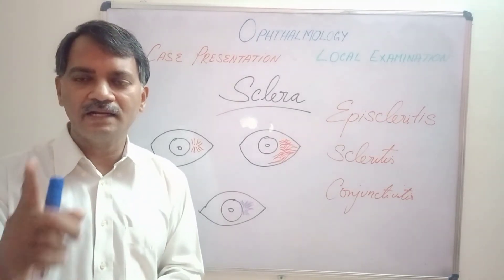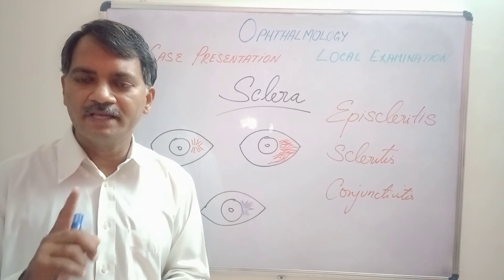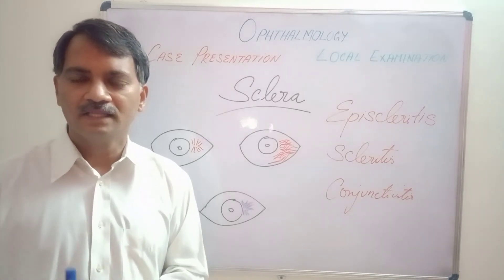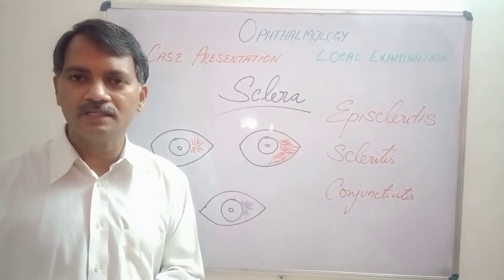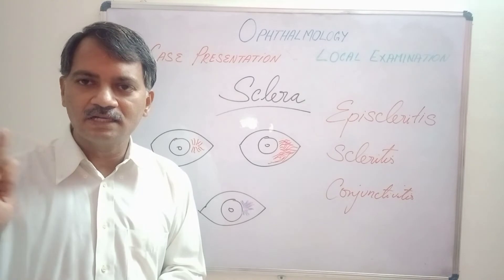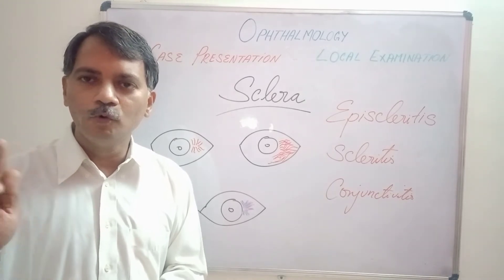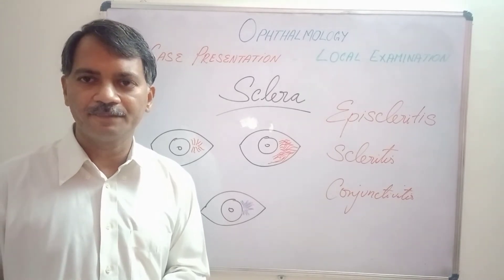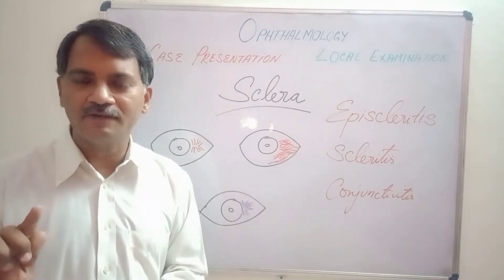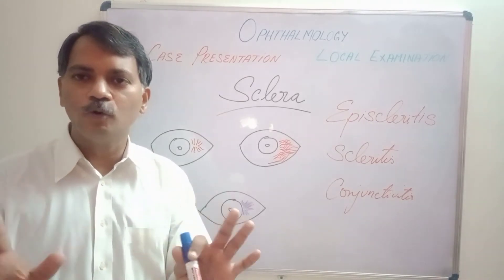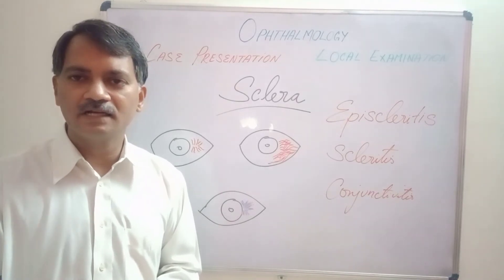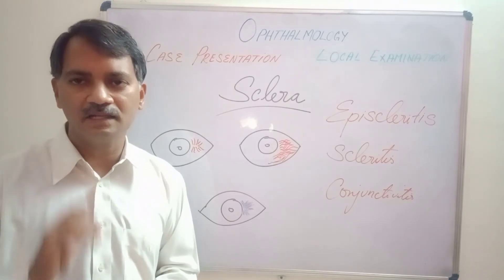But in episcleritis and scleritis, the vessels are radially arranged. The second differentiating point is that in conjunctivitis, if you try to move the congested vessels, they will move along with the conjunctiva. But in episcleritis and scleritis, when we move the conjunctiva, the underlying vessels do not move. This is how conjunctivitis is differentiated from episcleritis and scleritis.